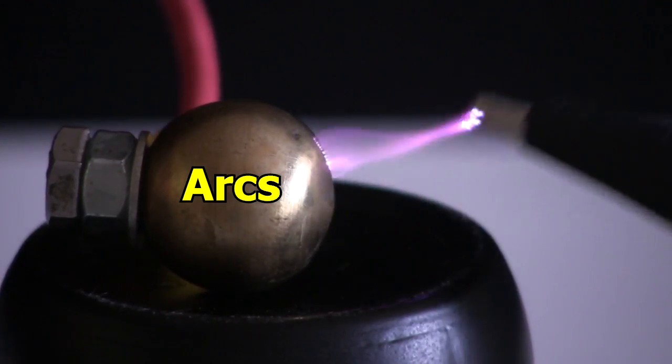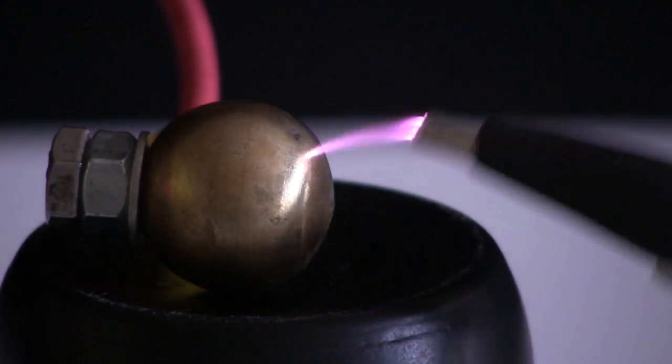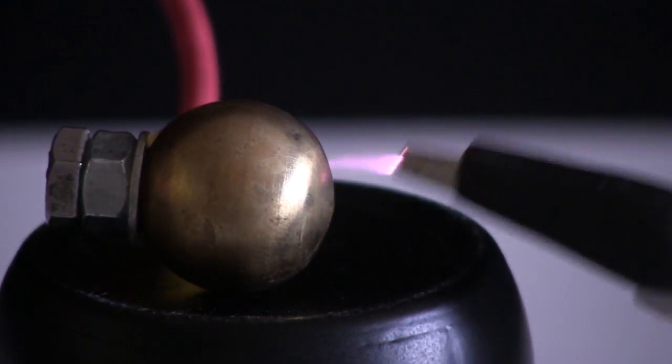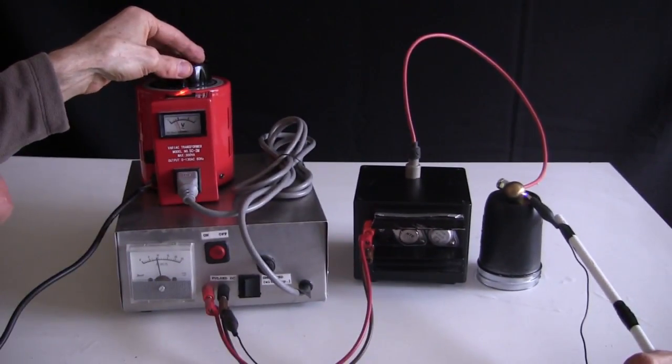But sometimes we get an arc instead. An arc is like a spark, but there's no shortage of charge, so it keeps going. That's the case with this homemade high voltage power supply.